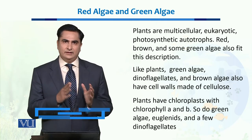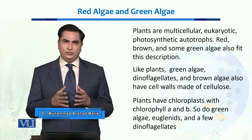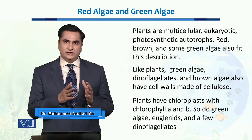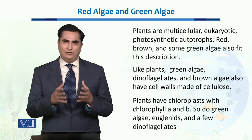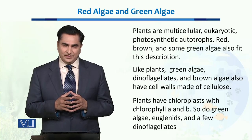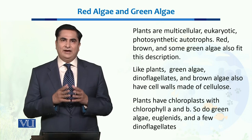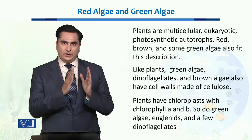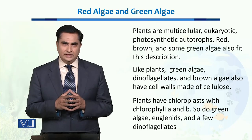Just like the plants, red algae and green algae are also photosynthetic autotrophs. They have the same composition just like the plants — they have a cell wall made up of cellulose, just like plant cells. Their chloroplasts also have chlorophyll A and B.